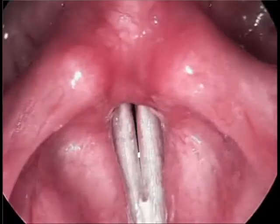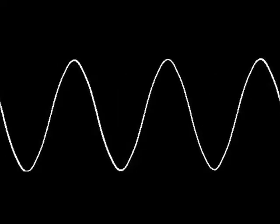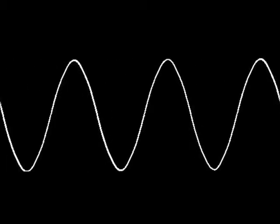The distance between the vocal folds throughout these cycles is known as the amplitude of vibration. The amplitude of vibration can be graphed to produce a sine wave, which expresses the distance between the vocal folds at a given time. The amplitude of vibration does not actually affect the pitch, but a graph of the change in amplitude of vibration of the vocal folds is a good way to show the speed of the vocal folds' vibrations and how they relate to the fundamental frequency.